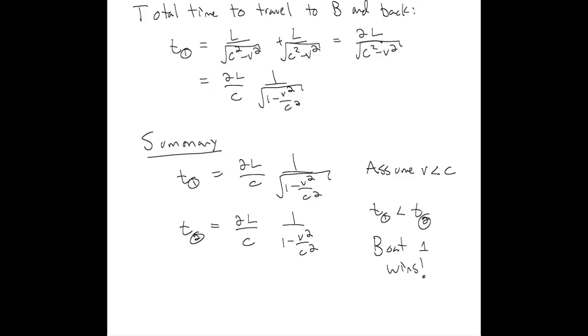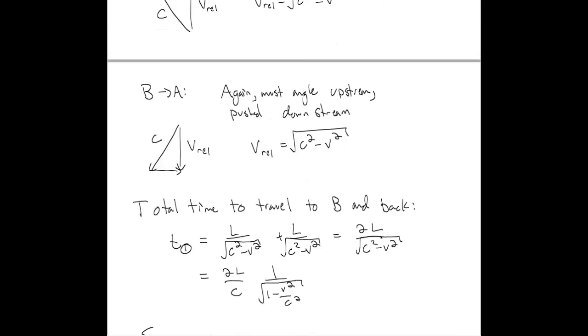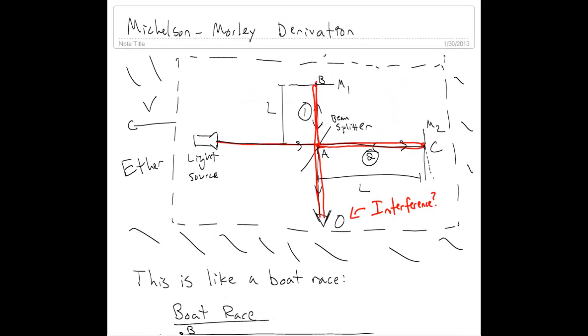Now this is exactly what's going on in the ether. In the ether, if we go back to our original example, the light is traveling both upstream and downstream and also across the stream and back. And so the time it takes for light to go there and back again depends on whether it's going up and downstream or across stream and back.